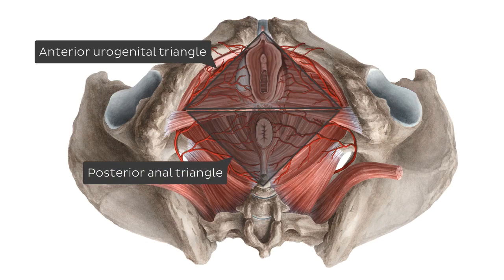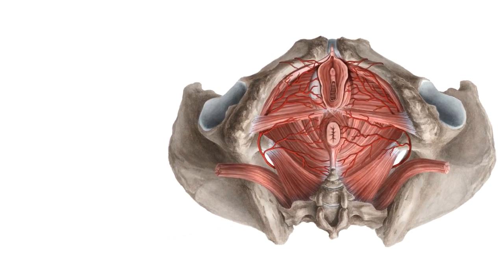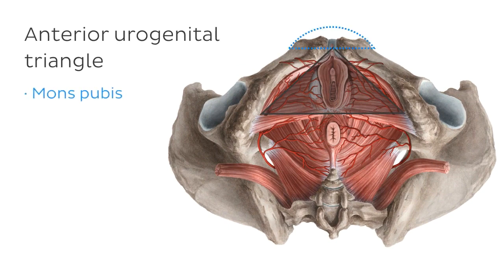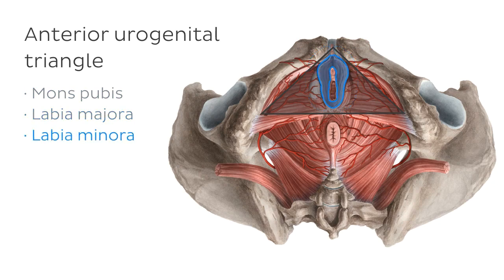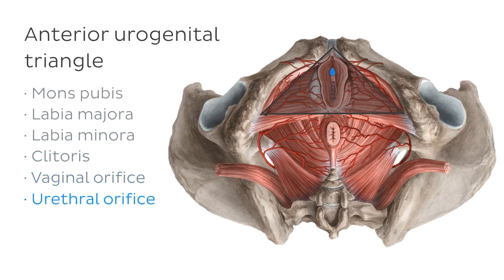Let's talk through what's in the anterior urogenital triangle first. In the anterior urogenital triangle we can see the mons pubis, which is a fatty mound of tissue that sits over the pubic bones. There's also the labia majora, which are two folds of adipose tissue surrounding the labia minora, which are two folds of inner skin surrounding the vagina. We have the clitoris, which is the female erectile body, the vaginal orifice, which is the opening into the vagina, and the urethral orifice, through which urine exits.